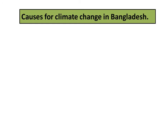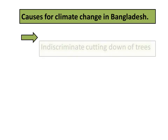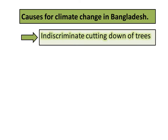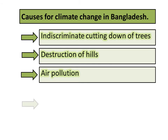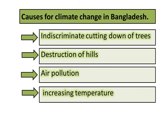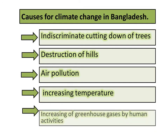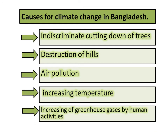But what is the reason behind it? Why is the climate of Bangladesh changing so fast? Number one: indiscriminate cutting down of trees. Number two: destruction of hills. Number three: air pollution. Number four: increasing temperature. Number five: increasing greenhouse gases due to human activities. These are all causes of climate change in Bangladesh.